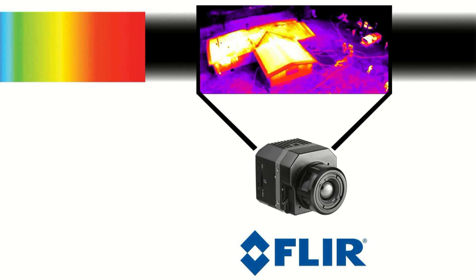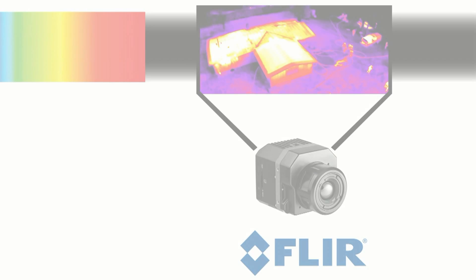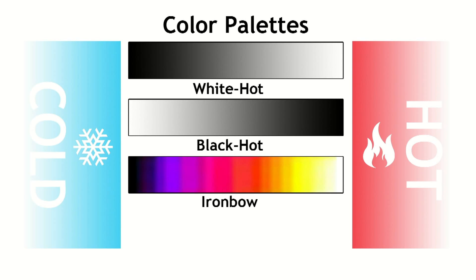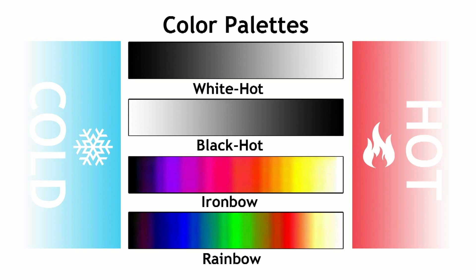What thermal imaging does is allow us to see a portion of the infrared spectrum. There aren't any colors we recognize in the infrared spectrum, so we get to choose what the world looks like by selecting a color palette inside the camera. Different colors represent different temperatures, ranging from hot to cold.